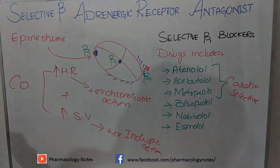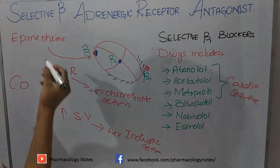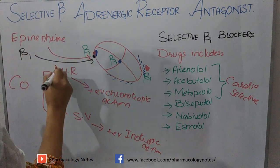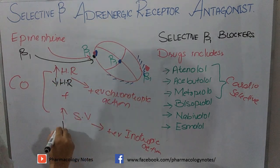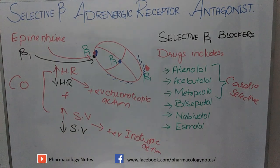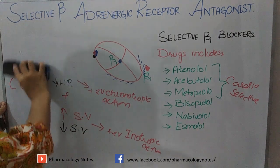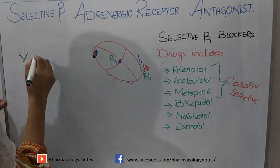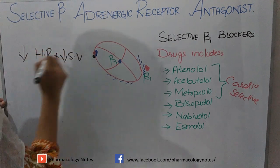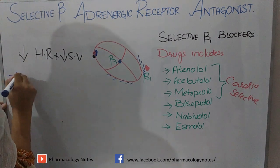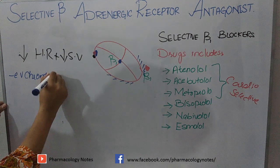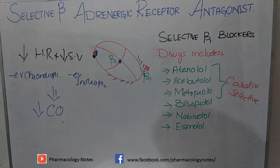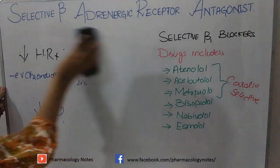Blockers do the totally opposite. Beta-1 blockers such as atenolol, acebutolol, and metoprolol bind to the beta-1 receptors. On the SA node, they decrease heart rate. On the myocardium, they decrease stroke volume. This produces a negative chronotropic action and negative inotropic action. Whenever these drugs bind to the beta-1 selective receptors, they decrease heart rate and decrease stroke volume, ultimately causing a decrease in cardiac output.